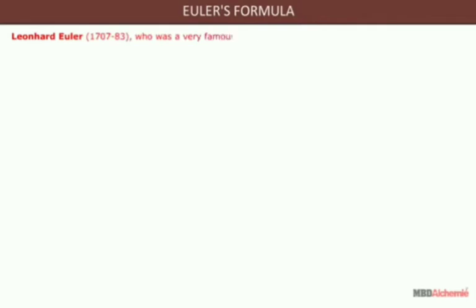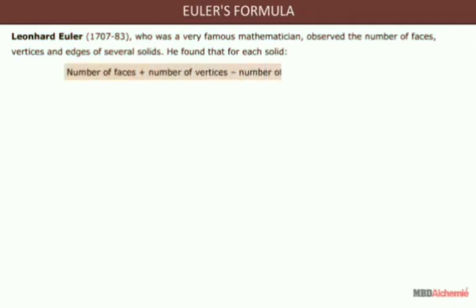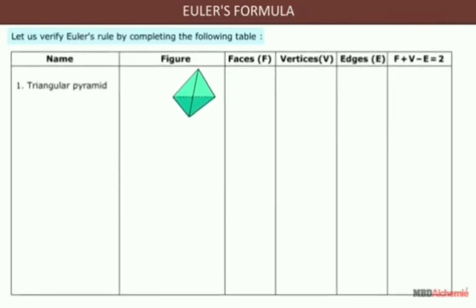Euler's formula, for your general information: Leonard Euler, who was a very famous mathematician, observed the number of faces, vertices, and edges of several solids. He found that for each solid, the number of faces plus the number of vertices minus the number of edges is equal to 2 — that is, F + V − E = 2. Let us verify Euler's rule by comparing the following table.